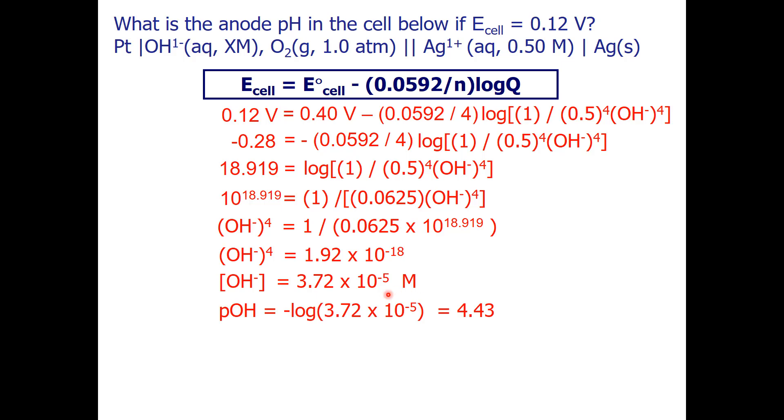We take the negative log of our hydroxide concentration to get the pOH of 4.43. And, finally, to get the pH, we take 14 minus the pOH, and our final answer is 9.57.